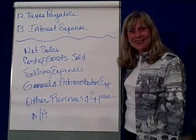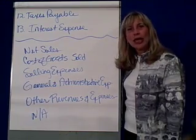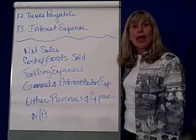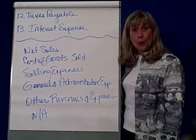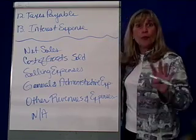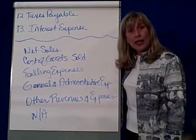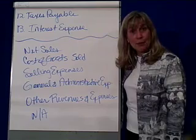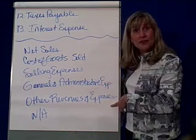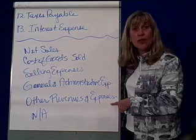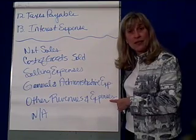We've been talking about the classified balance sheet. It's now time to look at the income statement. There are two different ways to prepare the income statement, both of which are perfectly fine. The first way is called the multi-step, and the multi-step has a lot of different subtotals or categories that we classify our revenues and expenses by.